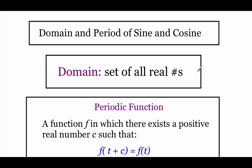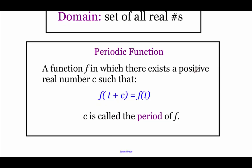Taking a look at what's known as a periodic function: we say a function f is periodic if there exists a positive real number c such that f of t plus c gives us the same exact answer as f of t. That c value is called the period of the function.